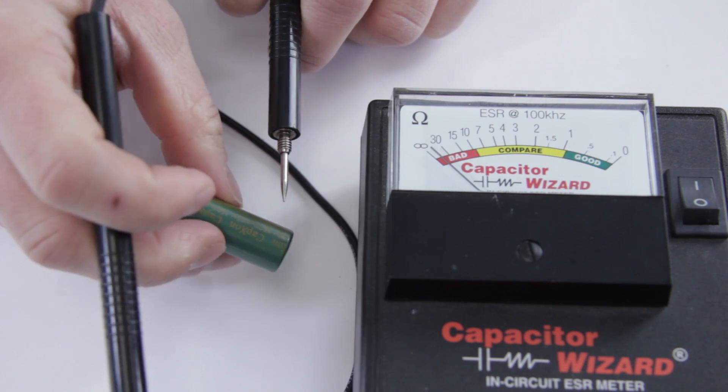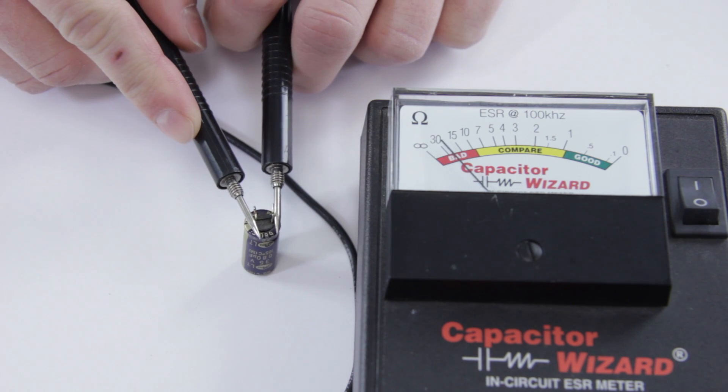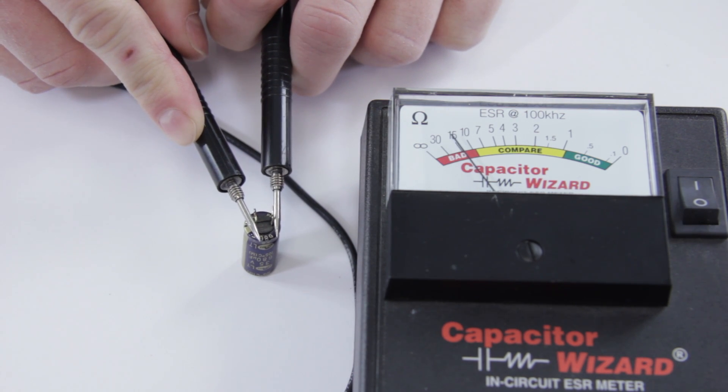This one we know is bad because it has the puffy top. This one should look really bad. This one's the one that blew. Yep, and it shows in the bad range and barely moves.